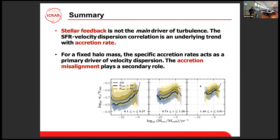As a summary, using the EGL simulation we found that stellar feedback does not seem to be the main driver of gas turbulence in the ISM of galaxies, and that the trend usually found in both observations and simulations appears to be an underlying trend with the accretion rate instead. The accretion rate is the main driver and misaligned accretion is the secondary driver. Thank you very much.